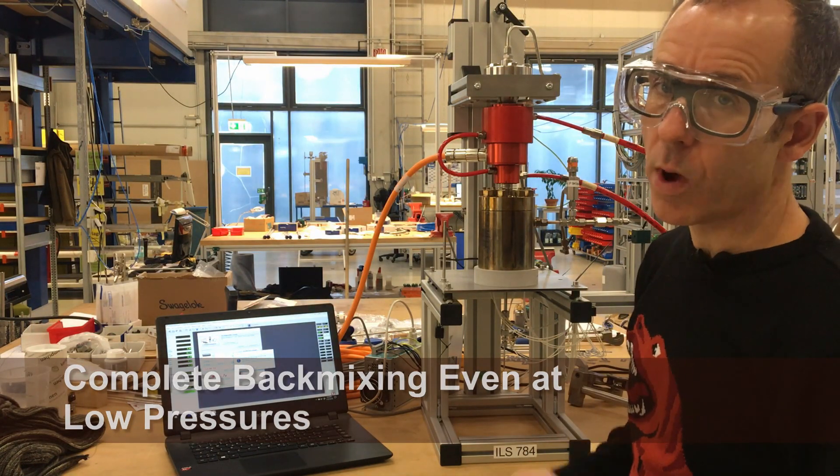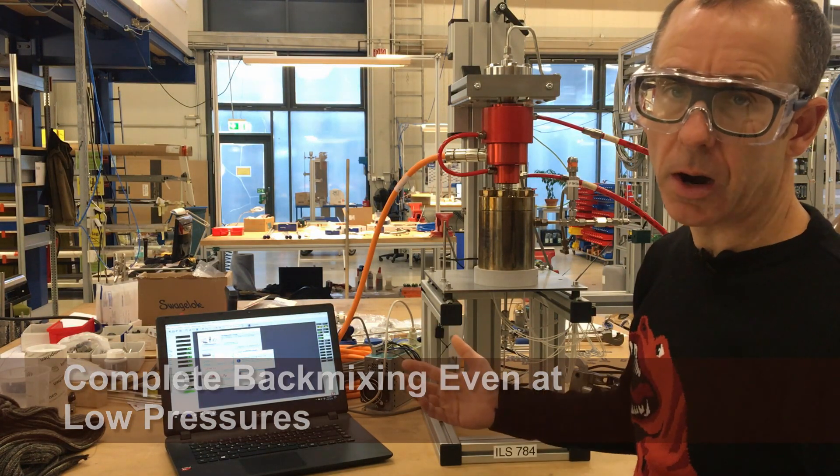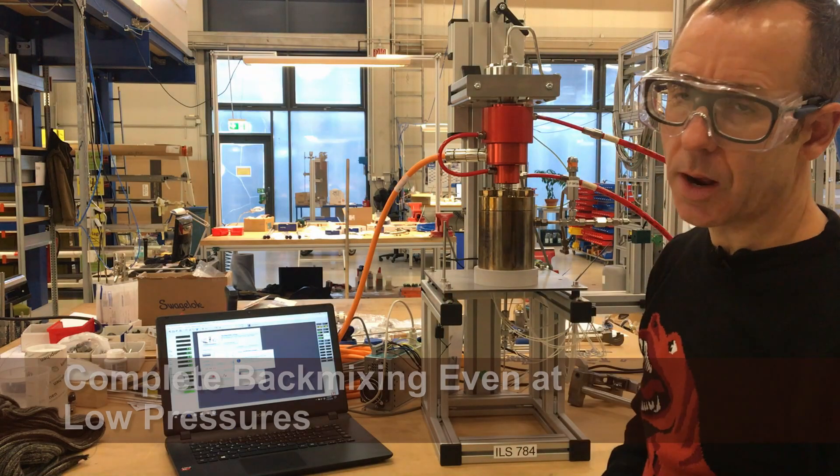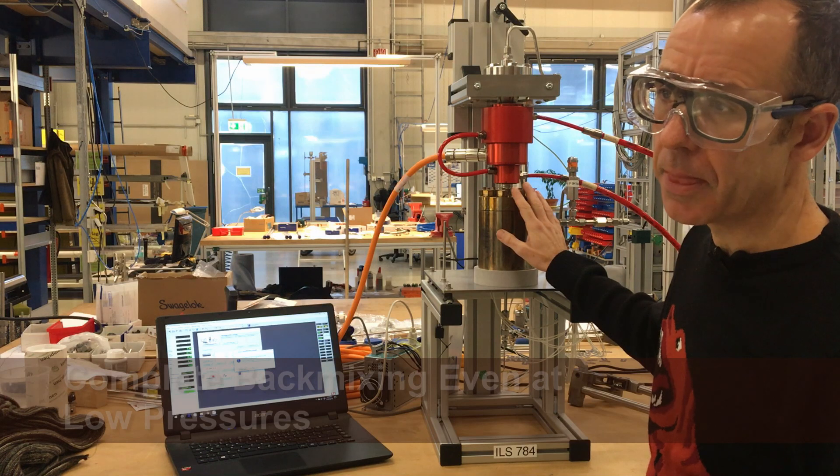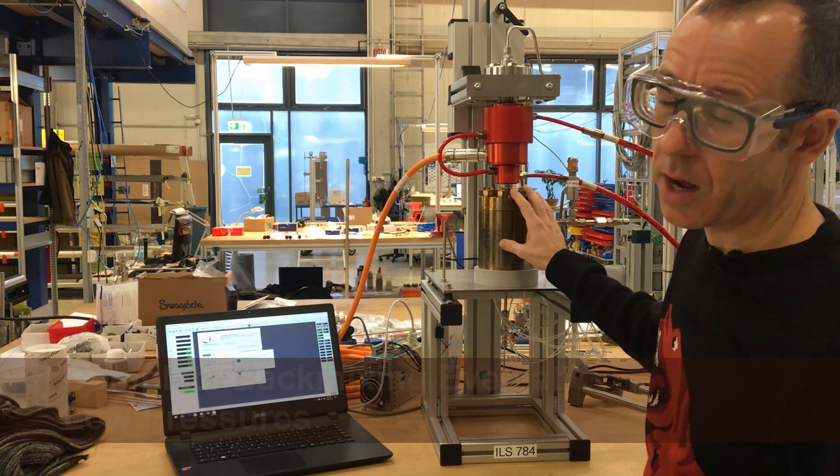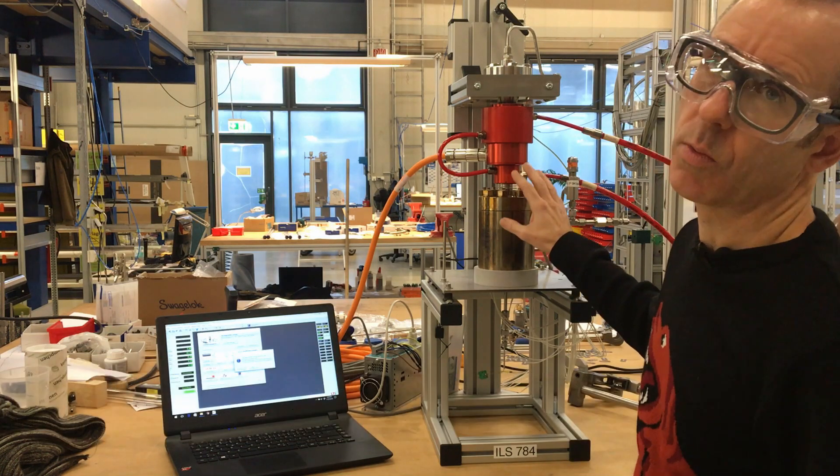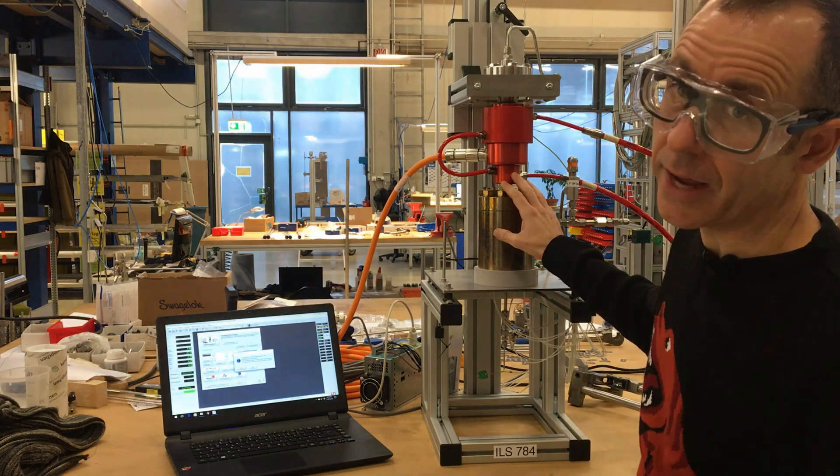So typical BIRD reactors operate well at say 30 bars or higher. In this case, we can operate up to 100 bars in this reactor, but we can also operate atmospherically, and especially if you're doing things like alkane conversions, which is a very hot topic at the moment, you typically want to work at low pressures and high temperatures.